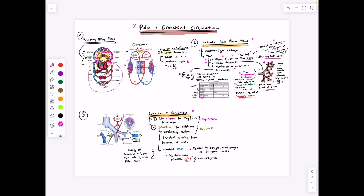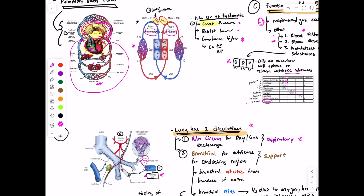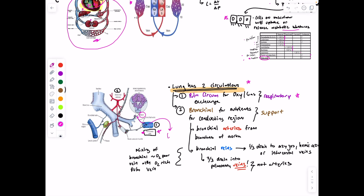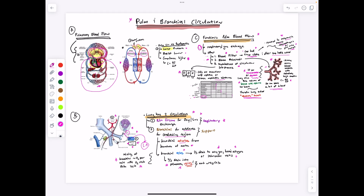There are really two circulations of blood in the lungs. Pulmonary circulation — blood coming from the pulmonary artery, past the capillaries and alveoli, then into the pulmonary veins back to the left atrium — is the main one for gas exchange. Then we have bronchial arteries, which supply nutrients to the conducting zone, coming from branches of the aorta. Importantly, one-third of bronchial vein drainage goes into the azygos, hemiazygos, and intercostal veins, but two-thirds drains into the pulmonary veins. Since pulmonary veins are oxygen-rich, this mixing of oxygen-poor bronchial blood with oxygen-rich pulmonary blood represents the first example of a shunt in the human body.